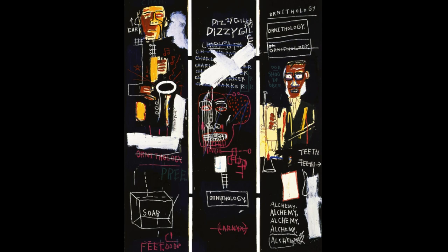The way Basquiat depicts jazz in his artwork is by writing words over and over again, crossing them out, and purposely misspelling some words. There's a rhythm created by the repetition and by the figures moving left to right. The text and imagery make it more dynamic and create a sense of discord rather than harmony, using text and imagery to elaborate on the theme of jazz music.